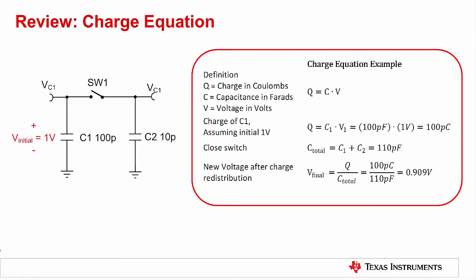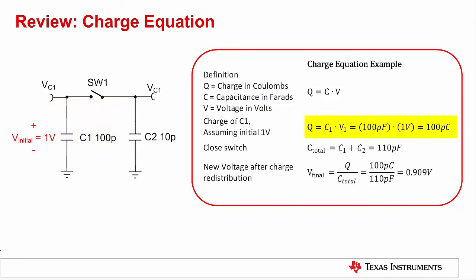The next concept we will introduce is called charge injection. Before covering it, let's review the capacitor charge equation. The charge across a capacitor is defined as the voltage across it multiplied by its capacitance: Q equals C times V, where charge Q is measured in Coulombs. When a charged capacitor is connected to another capacitor, charge redistributes across both, and the total voltage decreases. Initially, capacitor C1 is charged to 1 volt, giving 100 picocoulombs. When the switch is closed, the total capacitance increases to 110 picofarads, and the final voltage drops to about 0.909 volts, calculated using V equals Q divided by C.